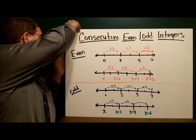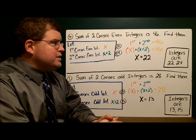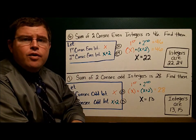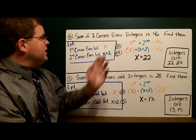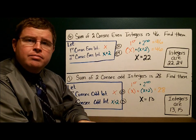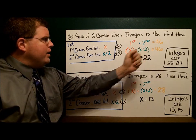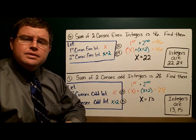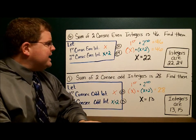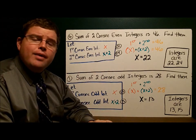Let's look at example six: the sum of two consecutive even integers is 46. The let statement sets up my problem. Because they're even integers, my first one is x and my second one is x plus two. The first plus the second equals 46, so x plus x plus two equals 46. Solving, x equals 22. That means the first integer is 22 and the second is 24. My answer makes sense because 22 plus 24 equals 46, and they are consecutive even integers.